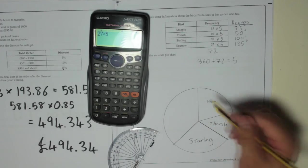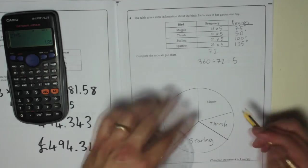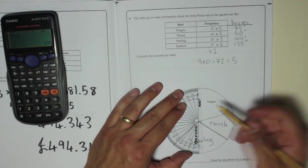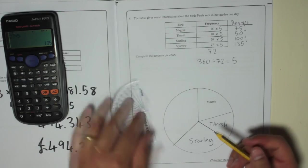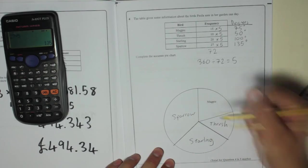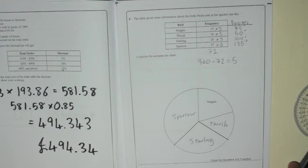And the last one is sparrow. 135 degrees, and he'll be whatever's left. You can check it if you want. 135 degrees, yep. And write it in, sparrow. There we go. Accurate pie chart.